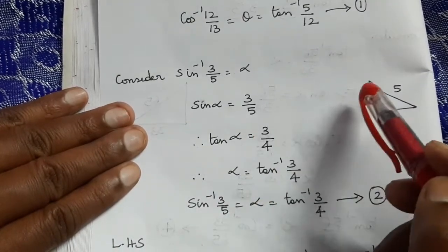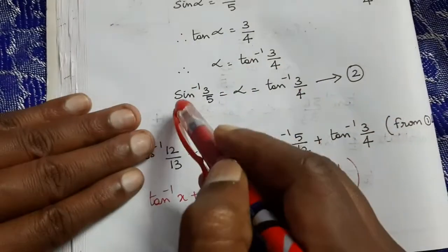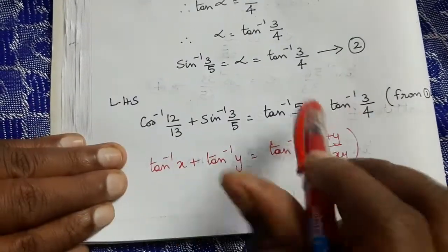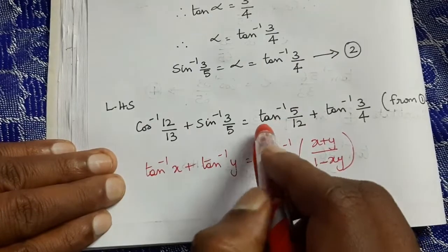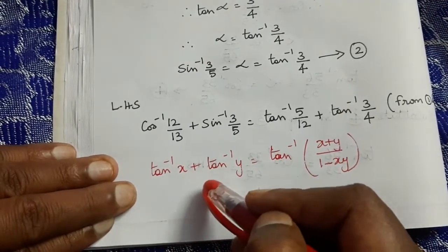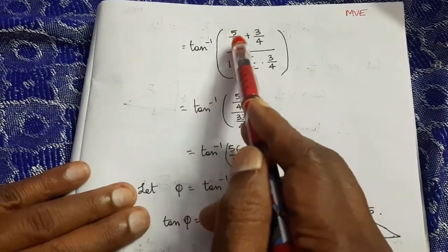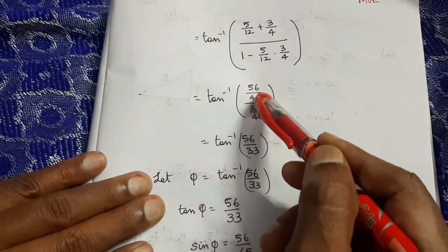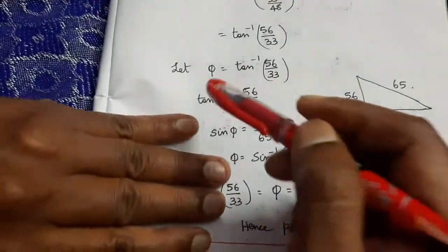Adjacent = 12, hypotenuse = 13, so opposite = 5. Hence tan θ = 5/12, giving cos⁻¹(12/13) = tan⁻¹(5/12). Also sin⁻¹(3/5): opposite = 3, hypotenuse = 5, adjacent = 4. So tan α = 3/4, giving sin⁻¹(3/5) = tan⁻¹(3/4). LHS = tan⁻¹(5/12) + tan⁻¹(3/4). Using the addition formula: tan⁻¹((5/12 + 3/4)/(1 − (5/12)·(3/4))) = tan⁻¹((56/48)/(33/48)) = tan⁻¹(56/33).